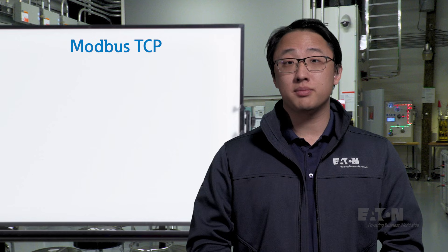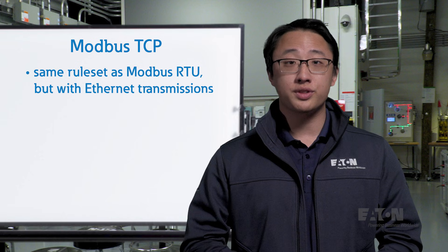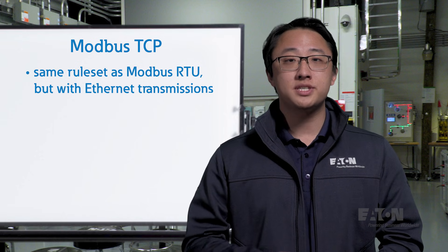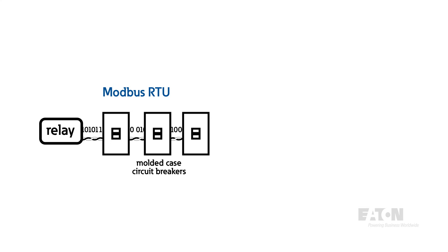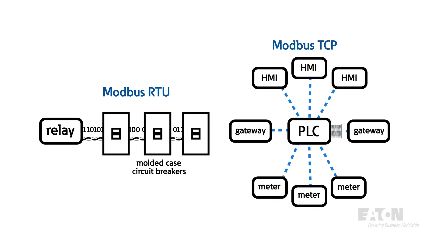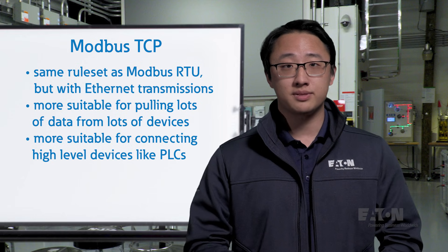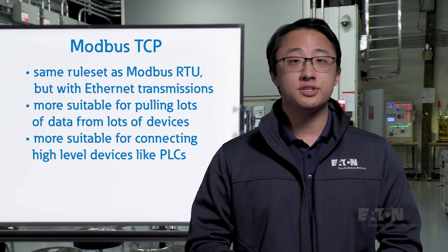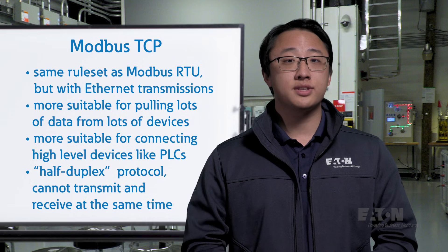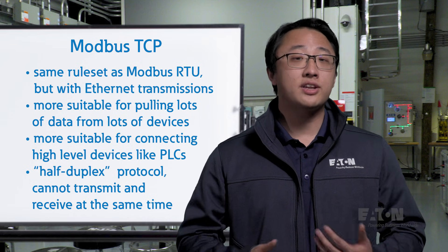Modbus TCP and Modbus RTU are cousins — they work off the exact same protocol operating principles, but with Ethernet transmission, Modbus TCP can send significantly more data much faster. Where Modbus RTU is suitable for device-to-device connections with simple data dependencies like breaker-to-relay, Modbus TCP is much more useful for pulling lots of data from lots of devices, making it more suitable for connecting higher-level devices like PLCs to meters or other PLCs. Still, Modbus is known as a half-duplex protocol — all connected devices can both transmit and receive, they just can't do both at once.